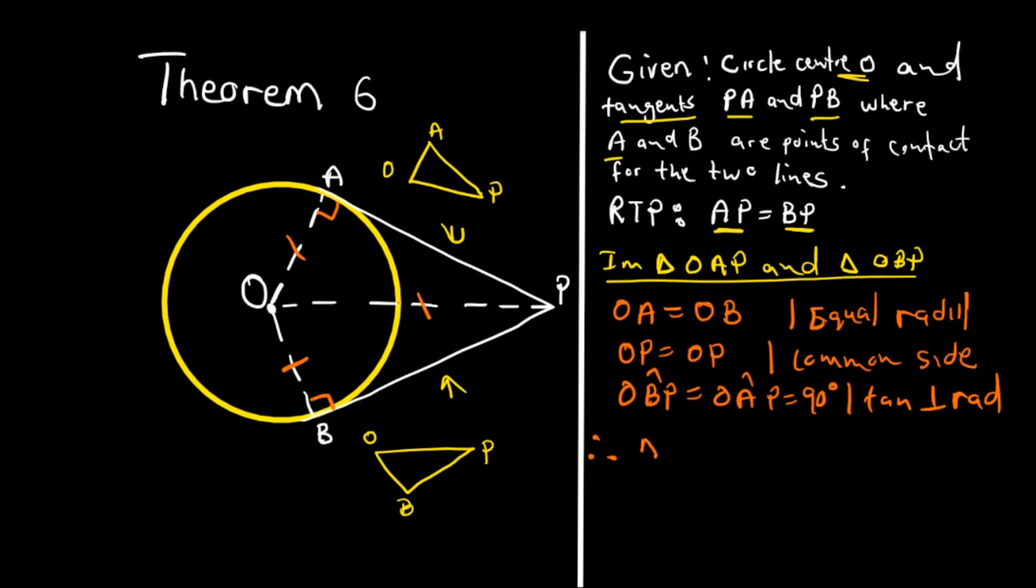Therefore, triangle OAP is congruent to triangle OBP. Reason for that is RHS: right angle, hypotenuse, side. The right means the right angle, and the hypotenuse which was proven, and the side which is the radius. Therefore, we can confirm that AP is equal to BP.